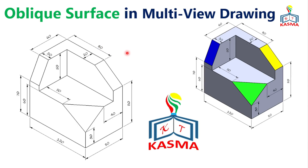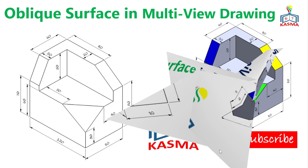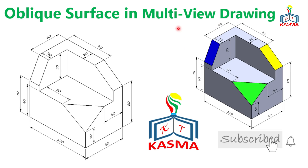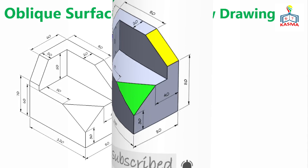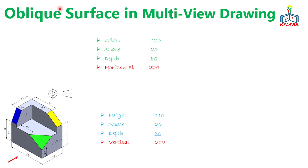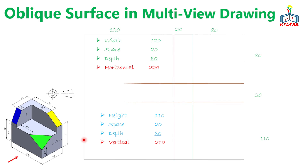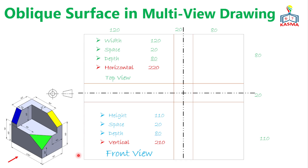This video mainly focuses on multi-view drawings of oblique surfaces, but I will also show how to draw multi-view drawings of inclined and normal surfaces. The isometric drawing of an object is given, and I will show you step by step how to construct the multi-view drawings using a dimensioning system with the third angle projection system. Finally, I will show the layout using the first angle projection system. For more on first and third angle projection, refer to the related video in the description.